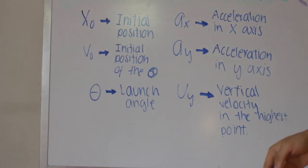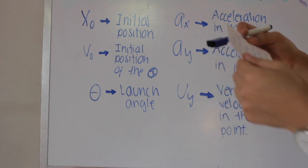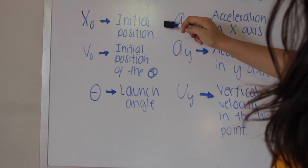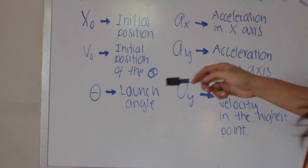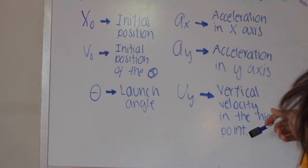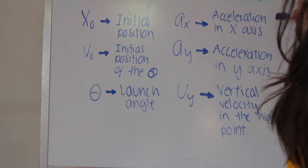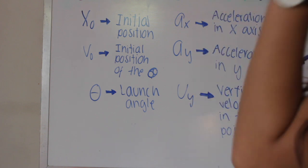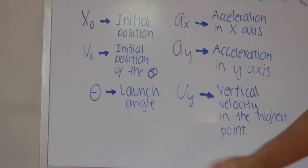I am going to explain the meaning of the symbols we are going to use in this problem. XO means the initial position. VO is the initial velocity of the ball. Theta will mean the launch angle. AX is the acceleration in the X axis, and AY is the acceleration in the Y axis. VY is the vertical velocity at the highest point.